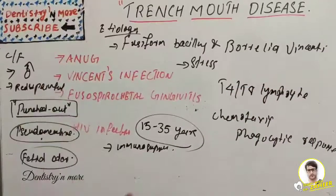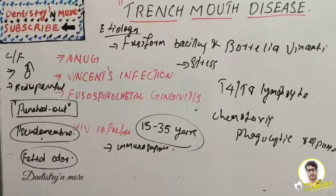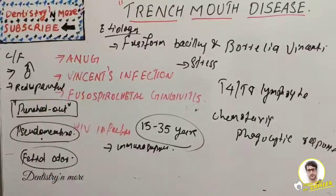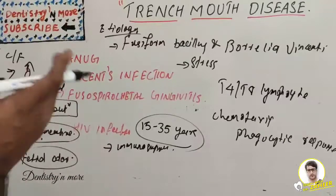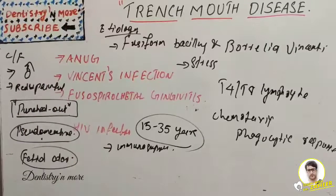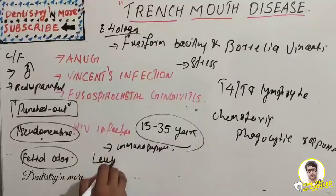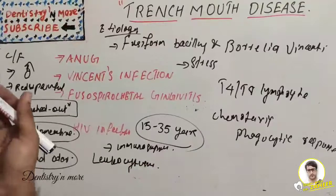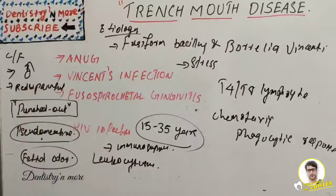The patient often develops headache, fever, malaise, and lymphadenopathy. There is always difficulty in taking food due to increased salivation, and there will be a metallic taste in the mouth. Most patients develop systemic manifestations in the form of leukocytosis, tachycardia, and other gastrointestinal disturbances.